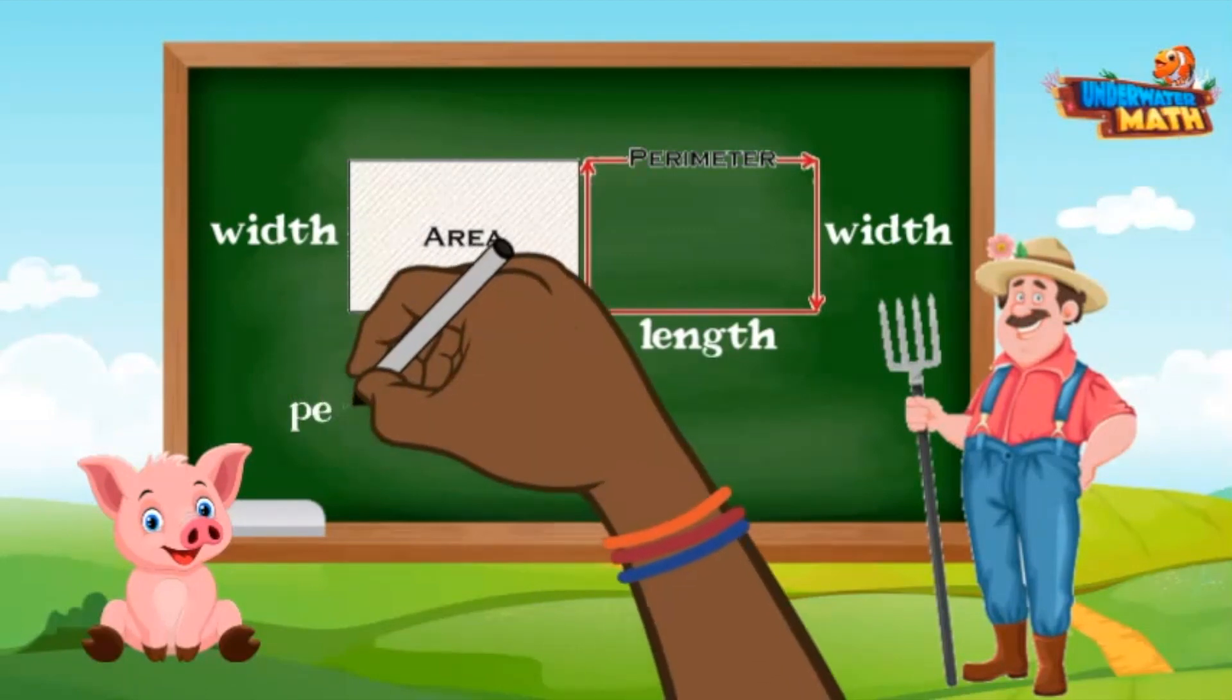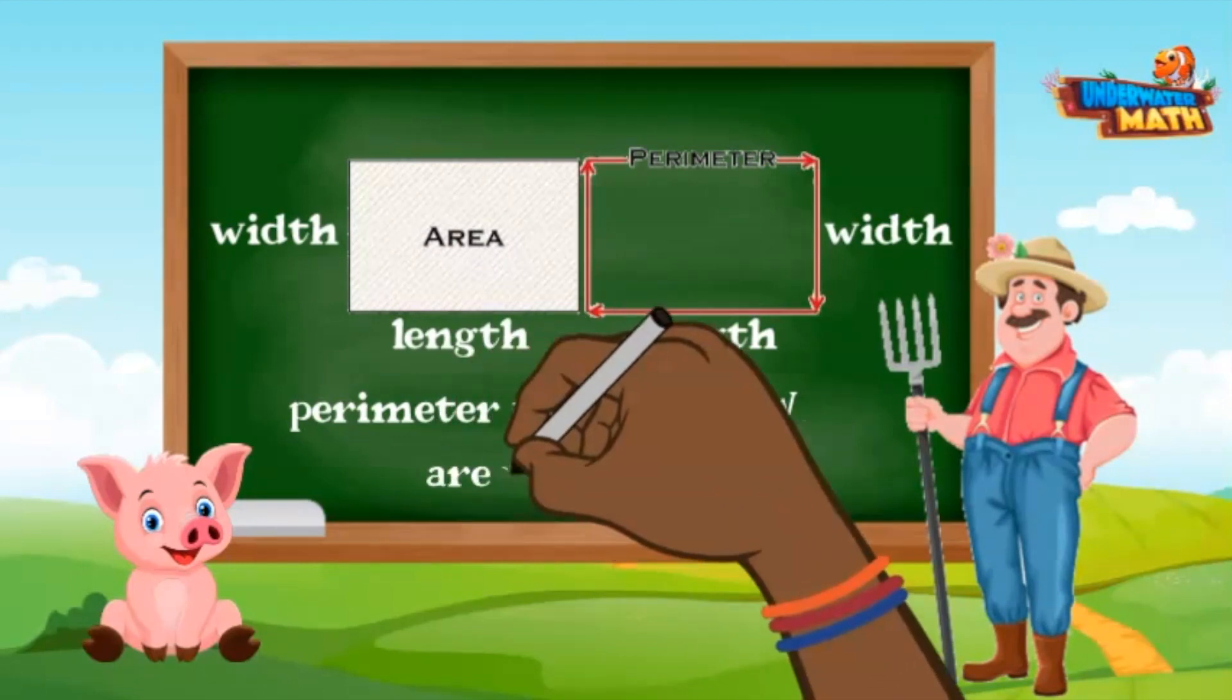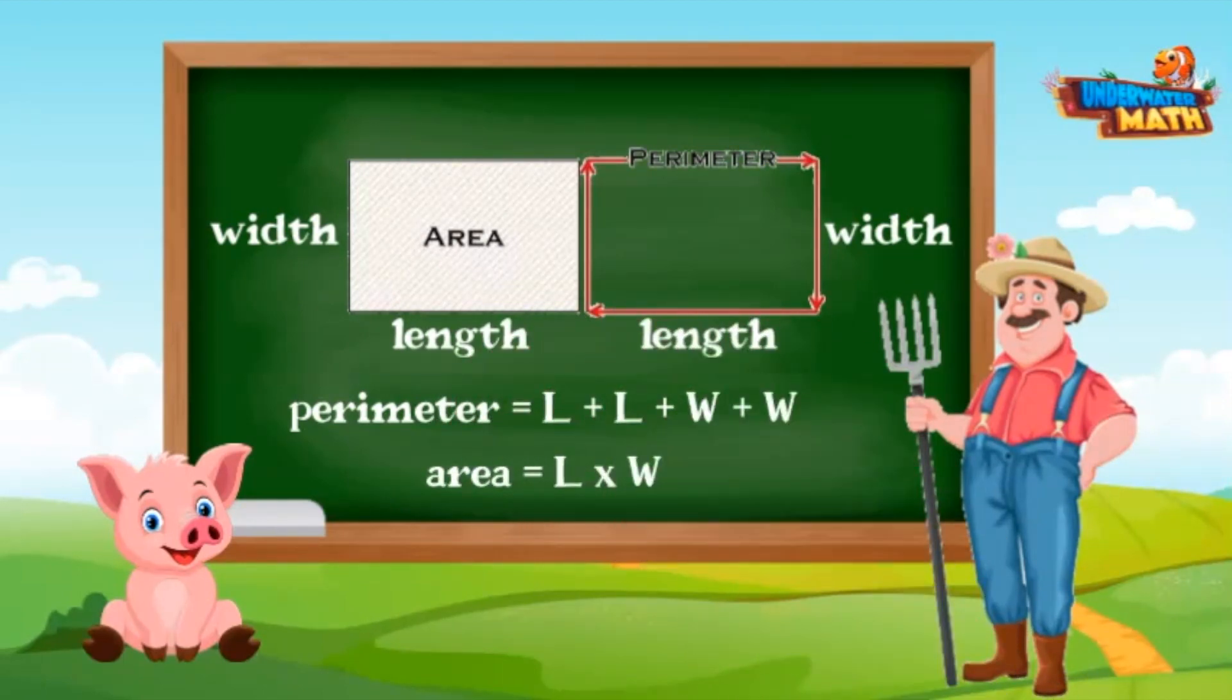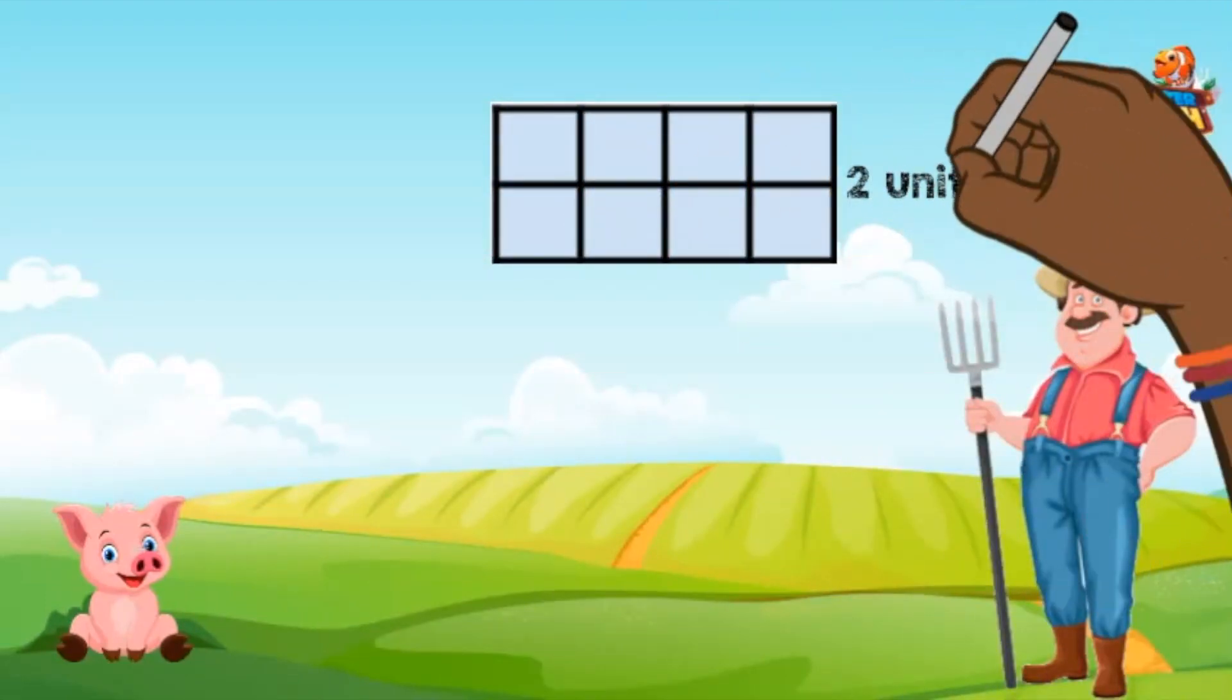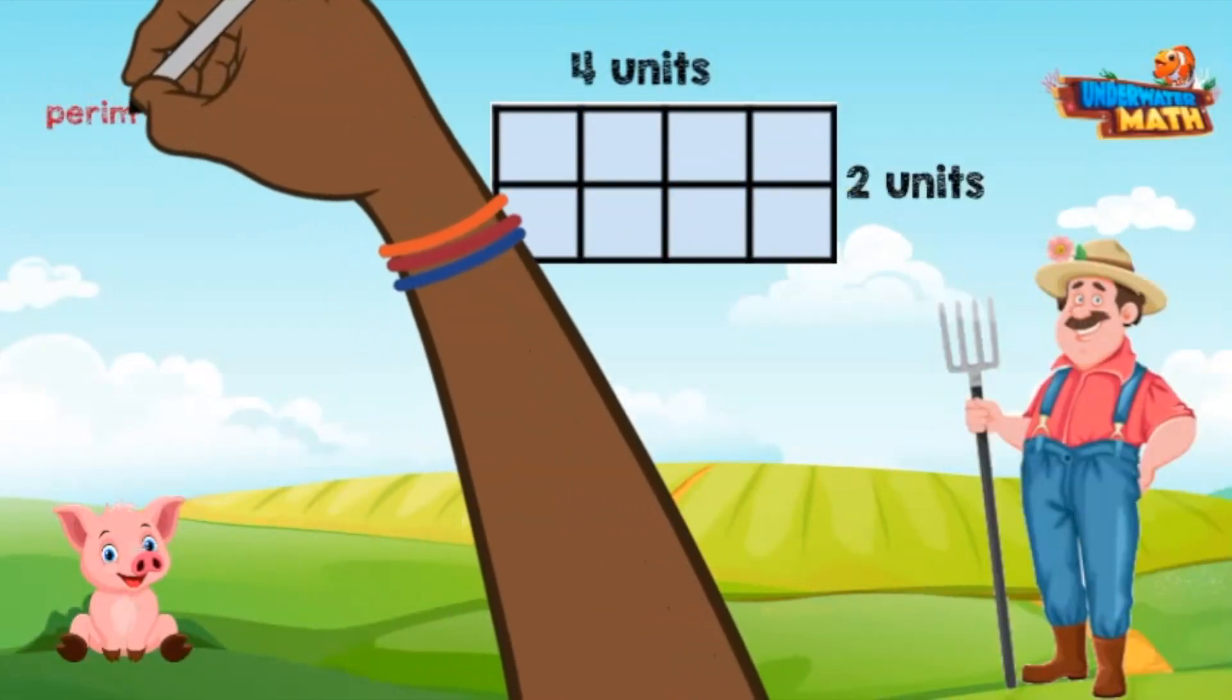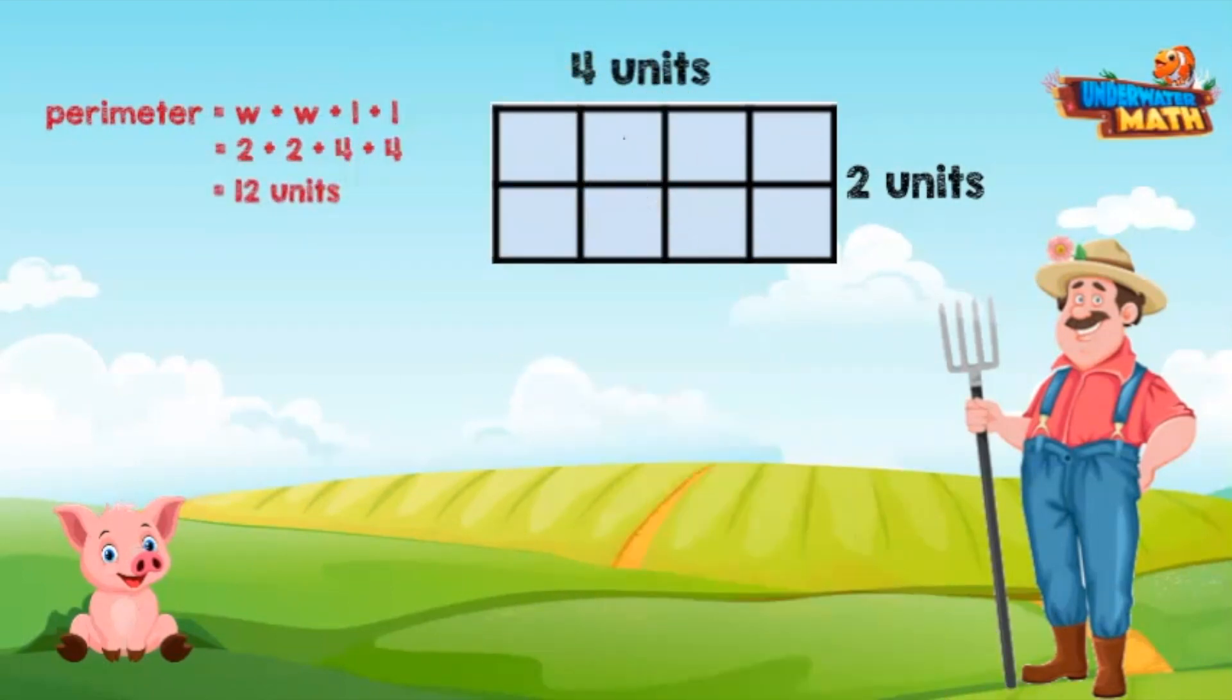The formula for perimeter is length plus length plus width plus width, and the formula for area is length times width. Let's look at this first rectangle. It has a width of 2 units and a length of 4 units. To find the perimeter we would add 2 plus 2 plus 4 plus 4, which equals 12 units.